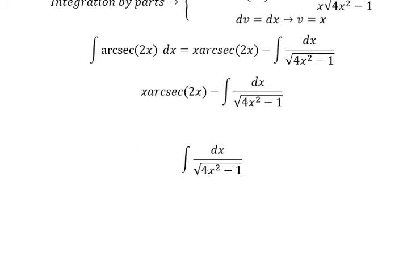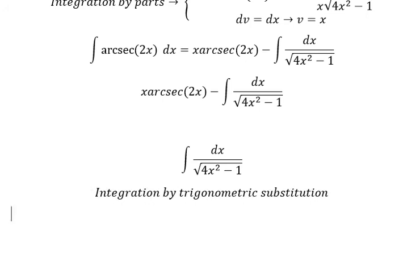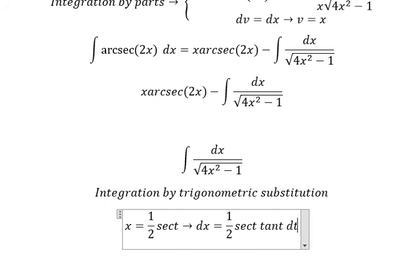We need to use integration by trigonometric substitution. So we put x equal to 1/2 secant of t. dx equals 1/2 secant of t tangent of t dt.